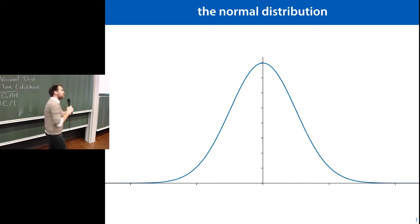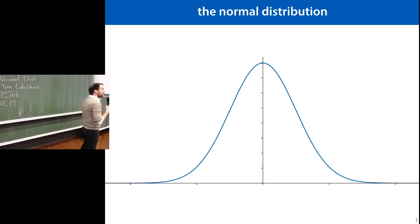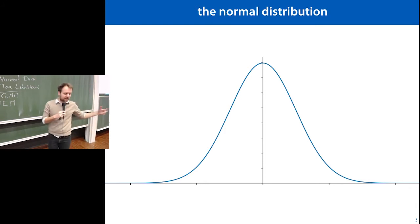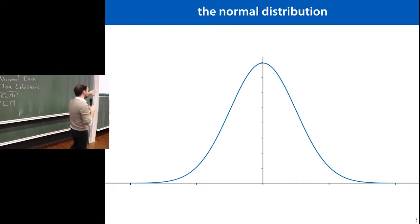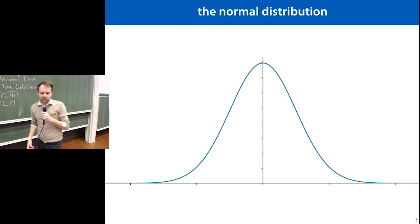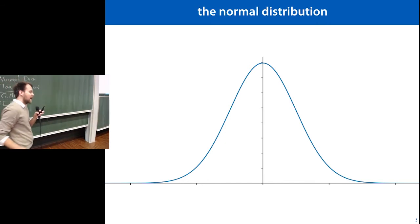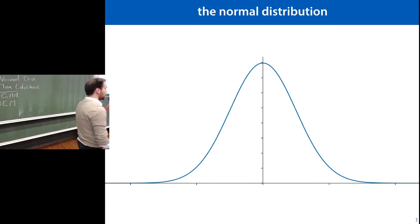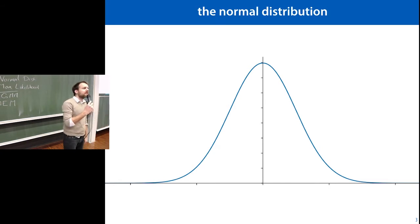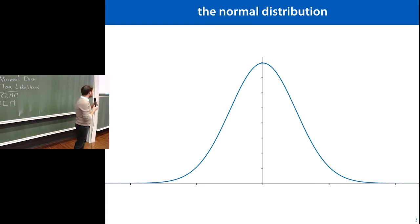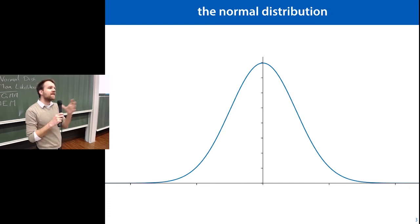That's one reason we see a lot of normal distributions — any process where things accumulate through summing will eventually produce a distribution that looks like this. But in machine learning we don't really care whether our models are actually true; we care whether they work. And the normal distribution has something very useful: it has a very definite scale. I talked about this before with income distribution, which is very much not normally distributed — income doesn't have a definite scale.